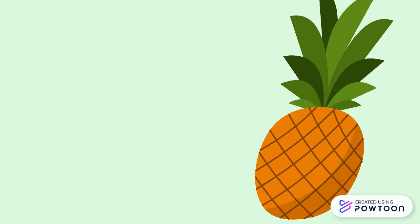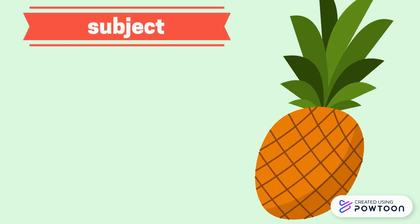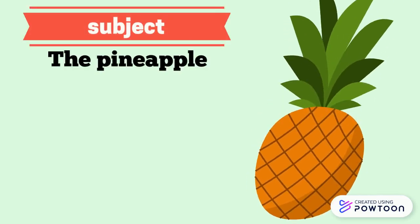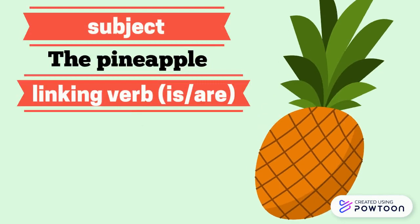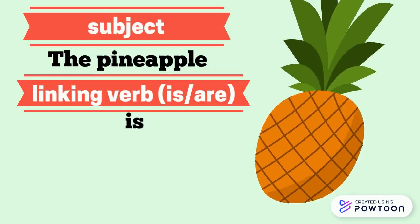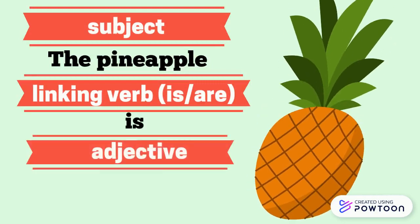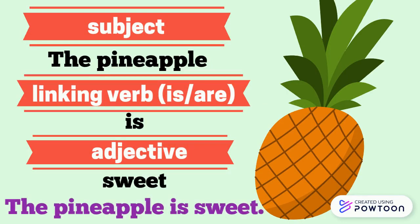Let's now put them all in one sentence. The subject is the pineapple. The linking verb is 'is'. And the adjective is sweet. Our sentence is: the pineapple is sweet.